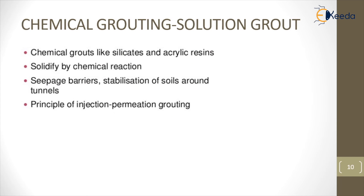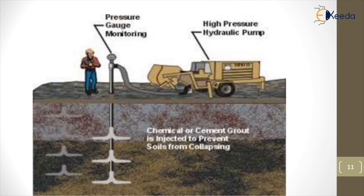Chemical grouting uses chemicals like silicates and acrylamide resins, which solidify inside the soil voids. It can create a stage barrier set by pieces of soils around the entire treatment area, and is applied into the soil using a pressurized injection system. In the figure, you can see a process in which a chemical grout is being inserted into the soil using a high-pressure hydraulic pump, and the pressure can be monitored from the ground surface.